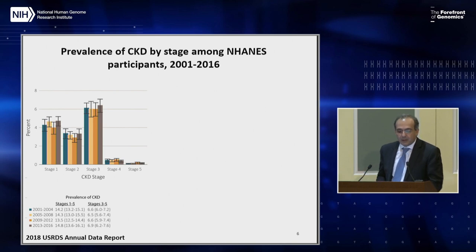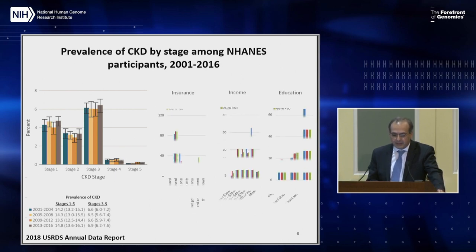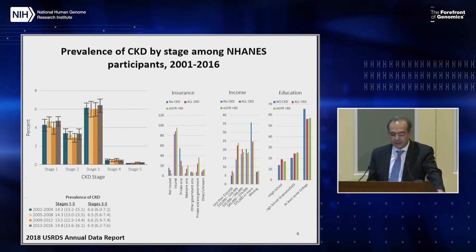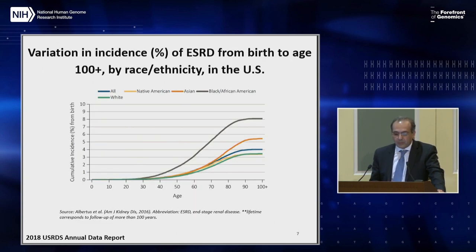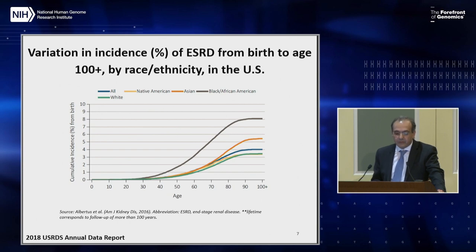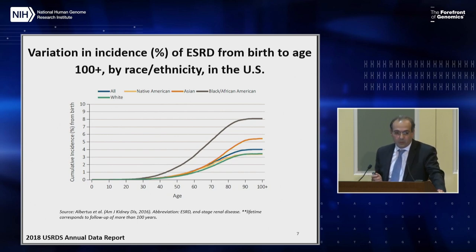Some background epidemiology: data from NHANES shows about 14% of the population has some level of kidney dysfunction across stages 1 through 5 of chronic kidney disease, stage 5 being the most severe. CKD is an equal opportunity disease, affecting all strata of the population when it comes to health insurance, income, and education. However, when looking at people who develop kidney failure and need dialysis or transplantation, there's a big racial and ethnic disparity. The lifetime risk of developing end-stage kidney failure is about 8% for African Americans, roughly half of that for those of white ancestry, with Hispanics somewhere in between.